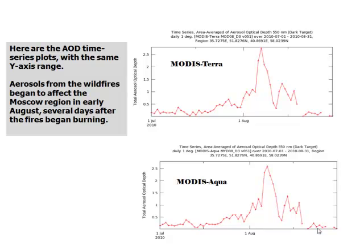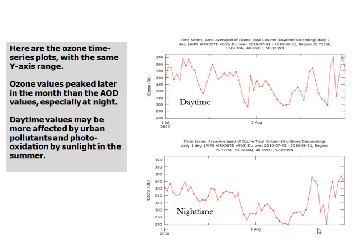Aerosols from the wildfires began to affect the Moscow region in early August, several days after the fires began burning. Here are the Ozone time series plots with the same Y-axis range. Ozone values peak later in the month than the AOD values, especially at night. Daytime values may be more affected by urban pollutants and photo-oxidation by sunlight in the summer.